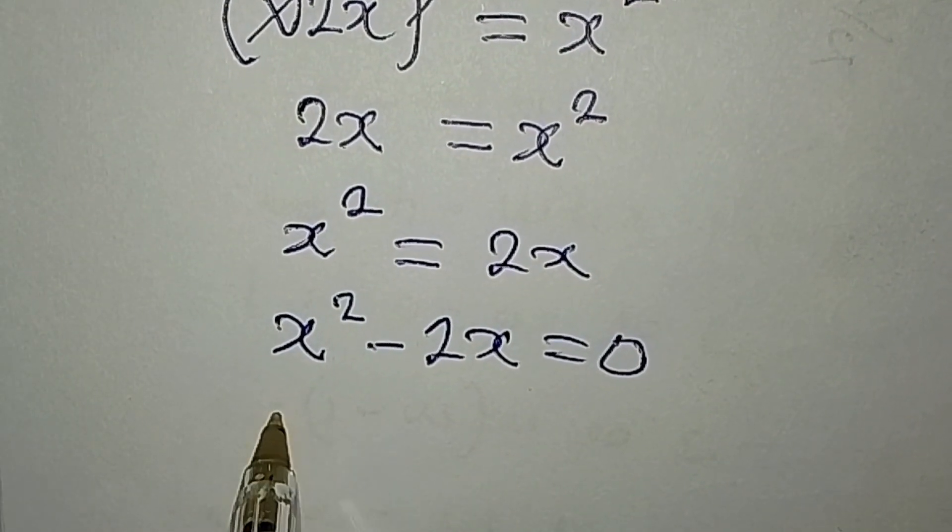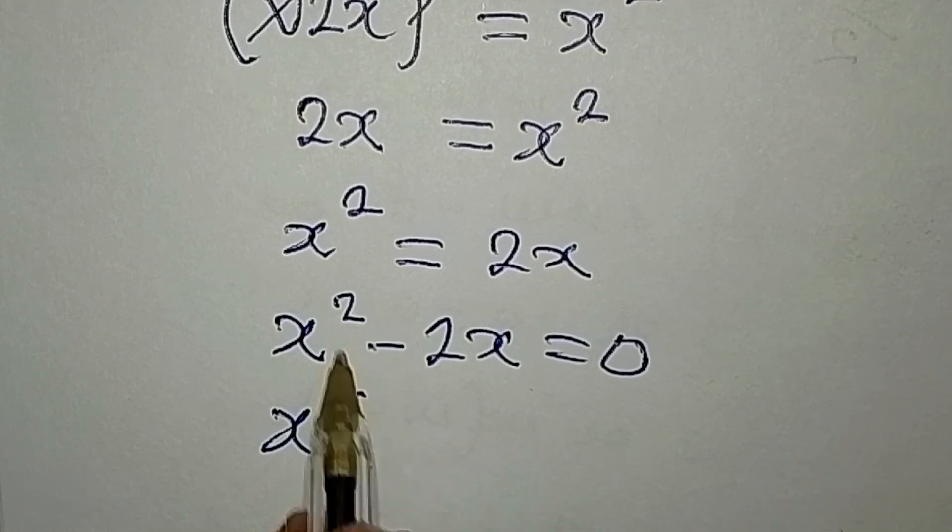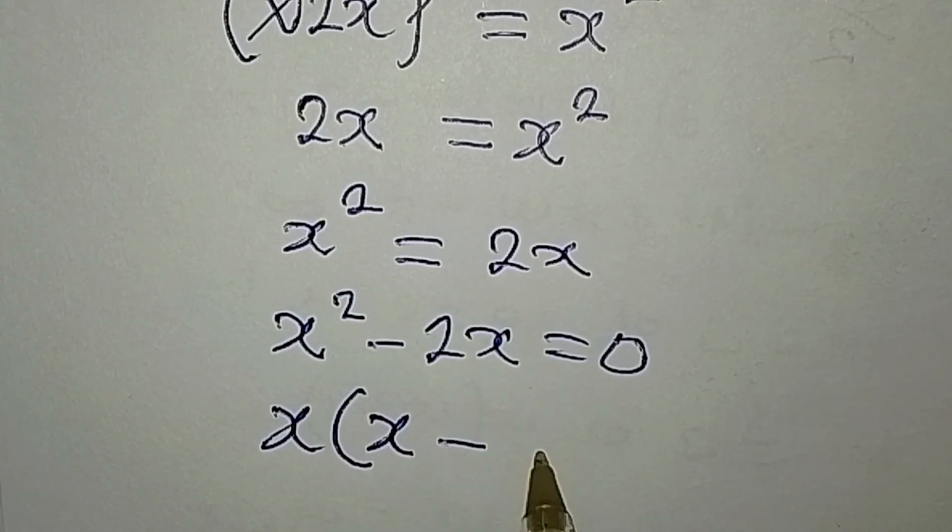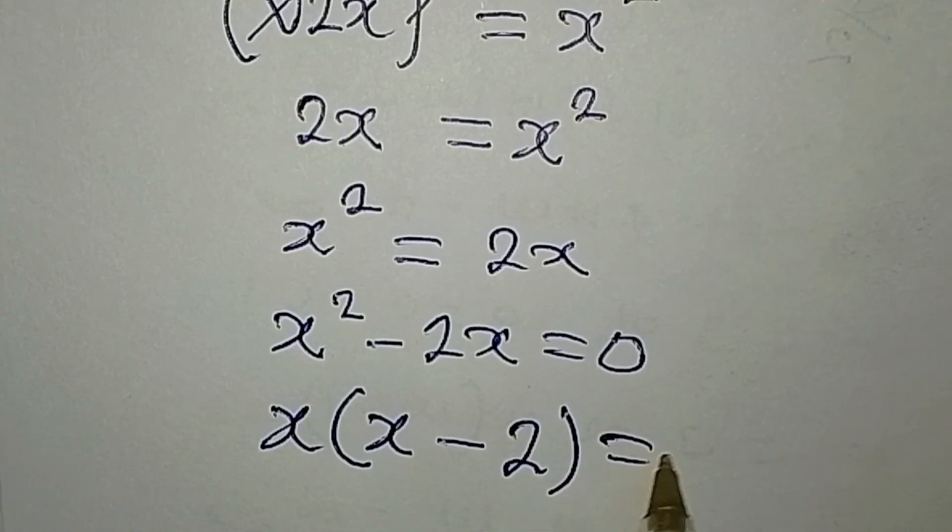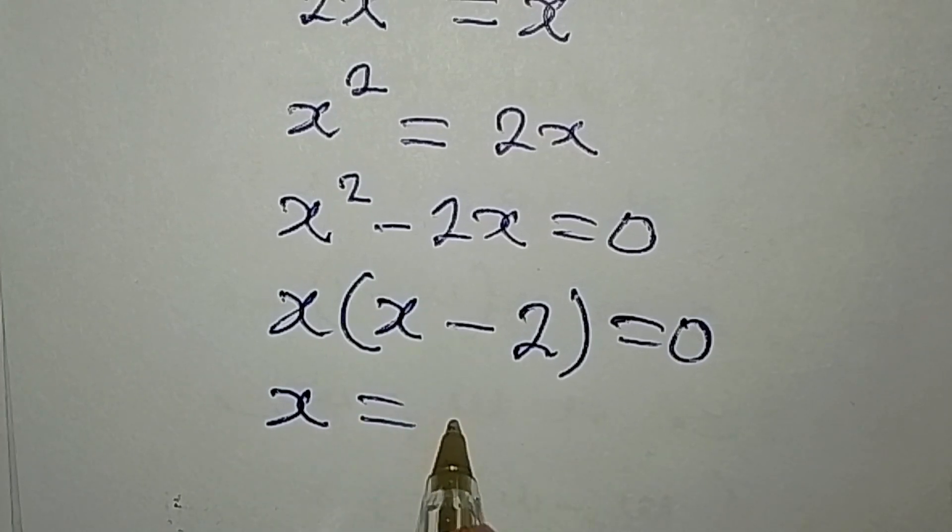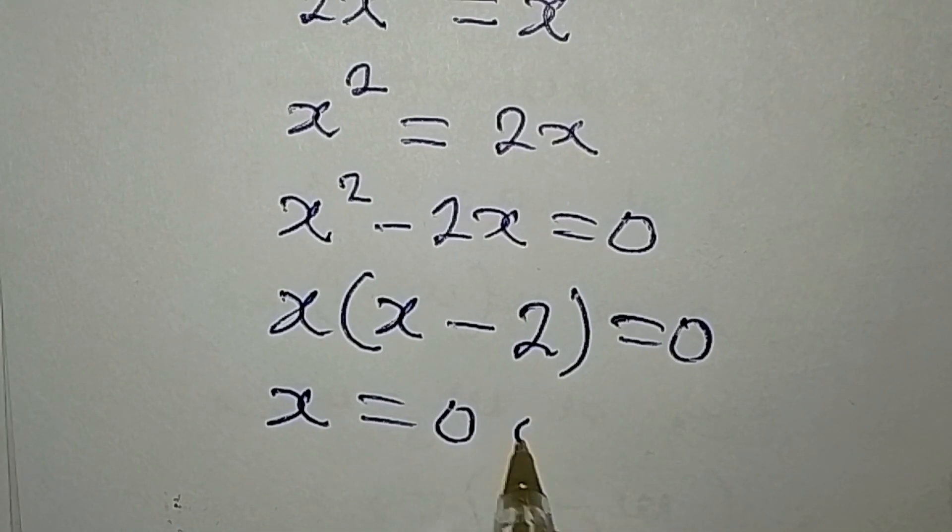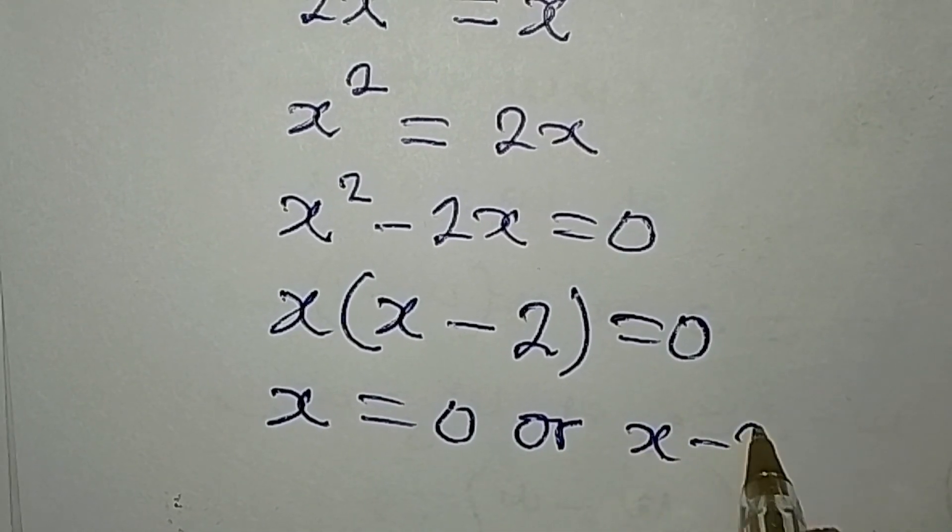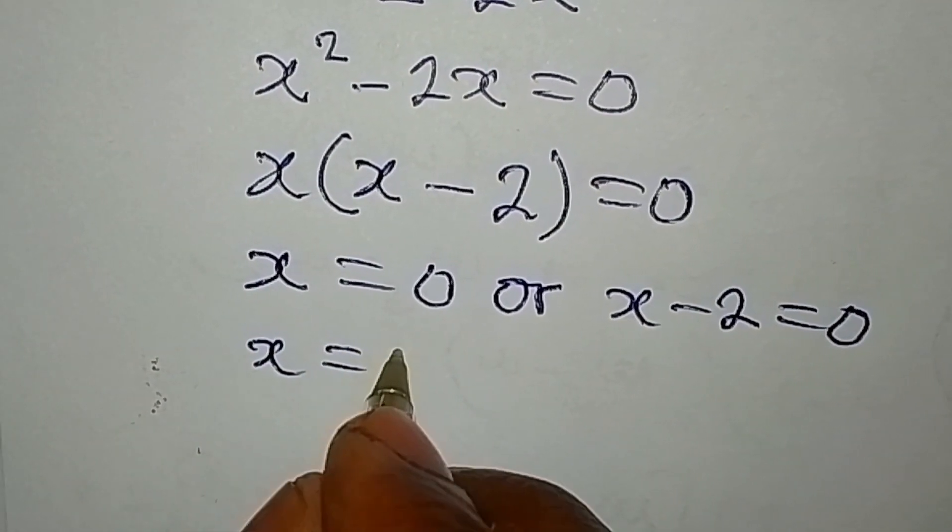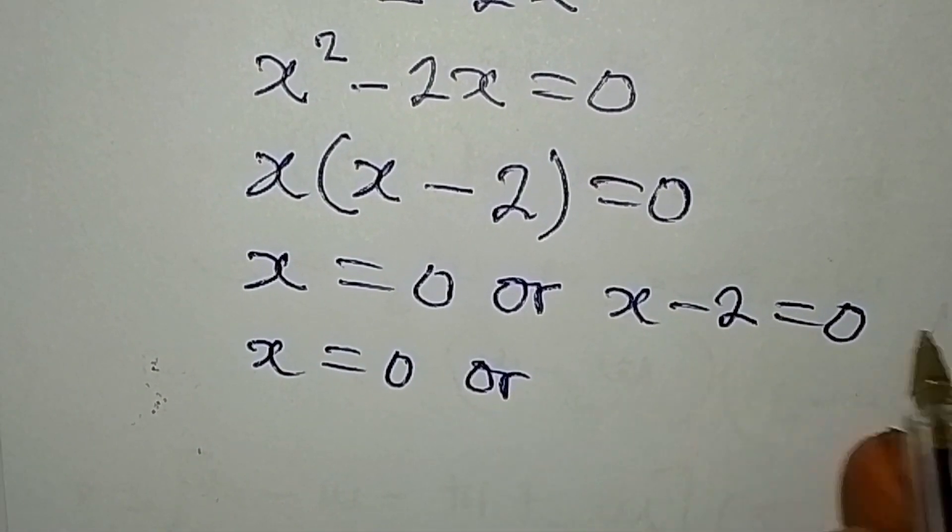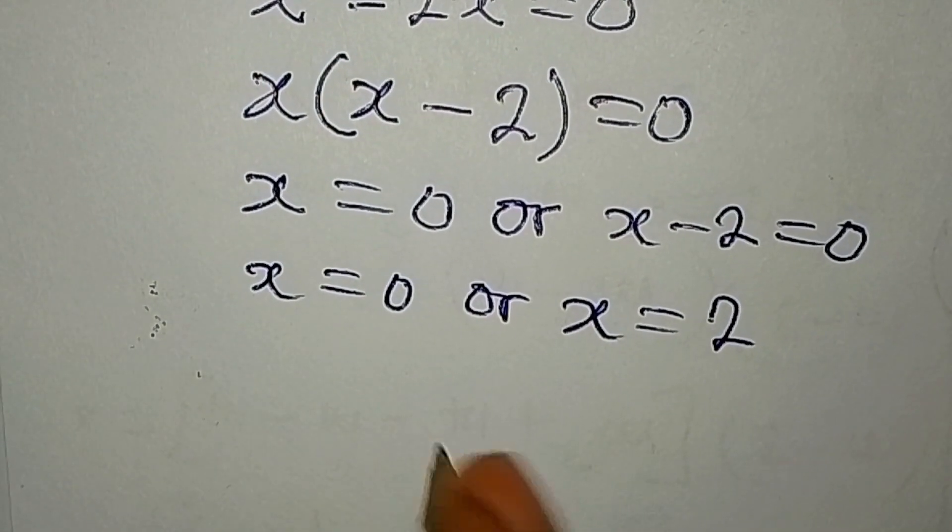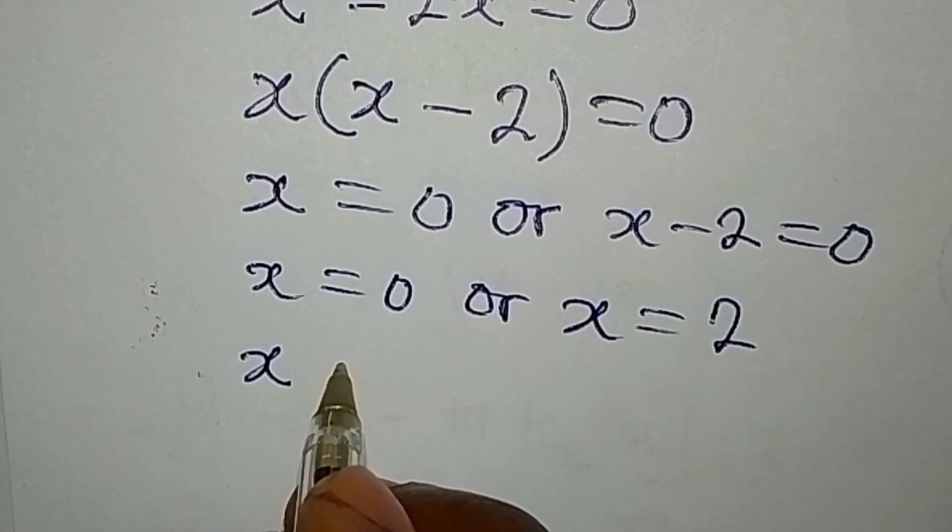Now we have a quadratic equation to deal with. Factorize so that you have x as the common factor, then you have x minus 2 inside the bracket. From here, it is either x is equal to 0, or x minus 2 is equal to 0. X is equal to 0, or x is equal to 2. Bringing the two solutions together, x is equal to 0 or 2.